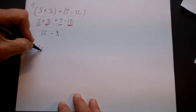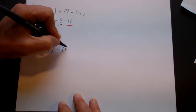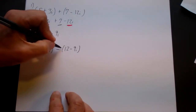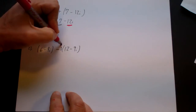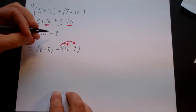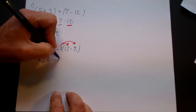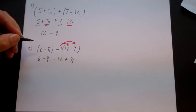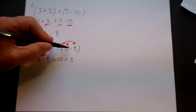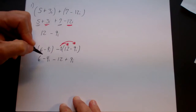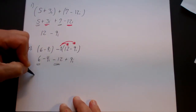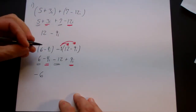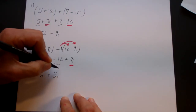The second problem is 6 minus 4i minus (12 minus 9i). Here we have a negative in front of a parenthesis, so there's a negative 1 there and you have to distribute the negative. You get 6 minus 4i minus 12, and then a negative of a negative is a positive, plus 9i. If people make mistakes on this problem, almost always it's when they distribute the negative. Collecting like terms: 6 and minus 12 give negative 6, and negative 4i plus 9i gives plus 5i. So the answer is negative 6 plus 5i.